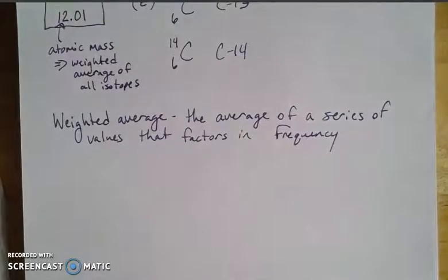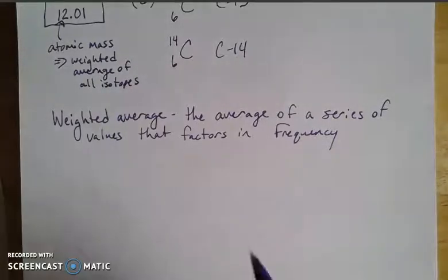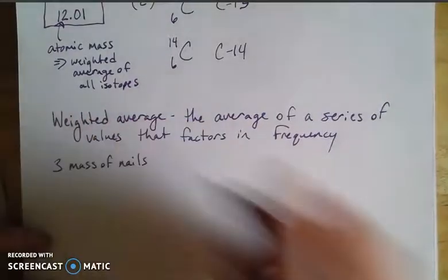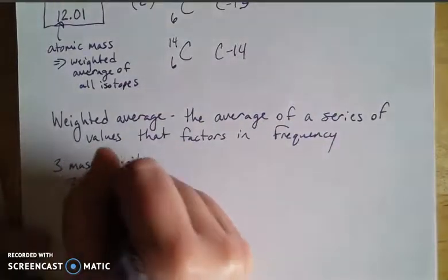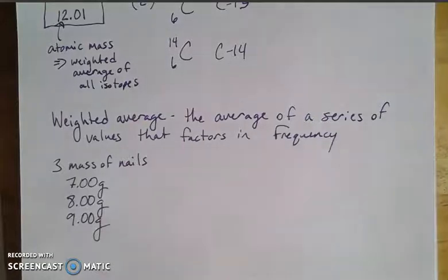You've probably worked with weighted averages before when calculating your grade in a class — tests worth 15%, homework worth 20%, quizzes worth 10%, and so on. To illustrate, let's go to a hardware store. Say I have three different masses of nails: one that's 7 grams, one that's 8 grams, and one that's 9 grams. They all look the same and are made of the same material, just with slightly different masses.